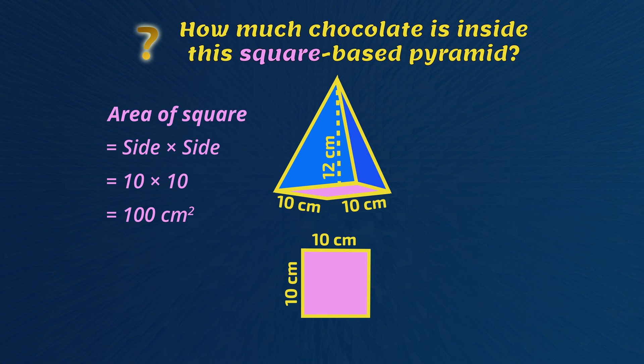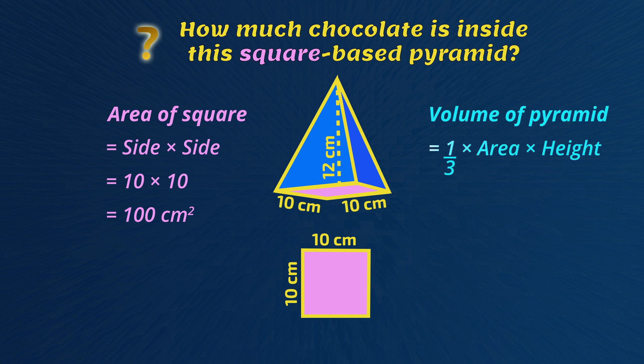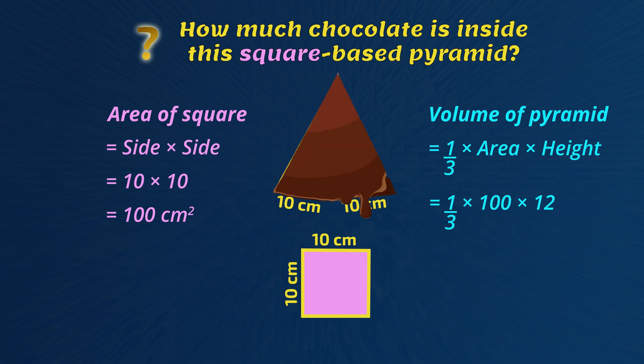Now for the second step. The volume of a pyramid equals one-third multiplied by the area of the base, multiplied by the perpendicular height of the pyramid. That's one-third multiplied by the area of the square of 100, multiplied by the perpendicular height, which is 12. The volume of this pyramid — that's the chocolate inside — is 400 cubic centimeters.